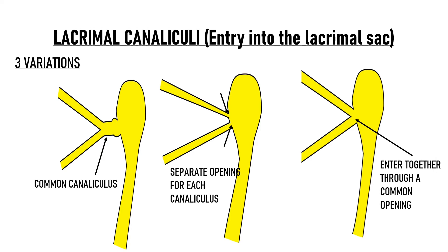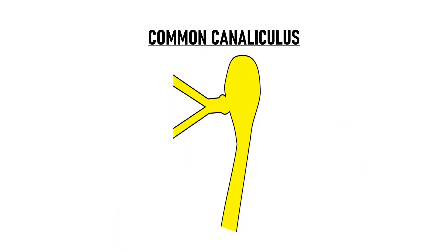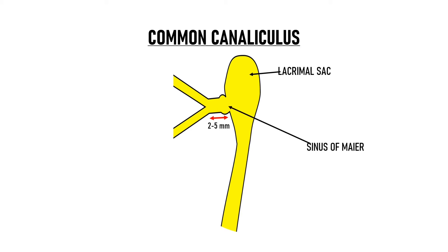The common canaliculus is about 2 to 5 mm in length and leads to the lacrimal sac. There is a small dilatation present in the lateral wall of the lacrimal sac known as the sinus of Maré — this is where the common canaliculus enters the lacrimal sac. The Valve of Rosenmuller is located at the junction of the common canaliculus and the lacrimal sac; it prevents retrograde reflux of fluid from the sac into the canaliculi.